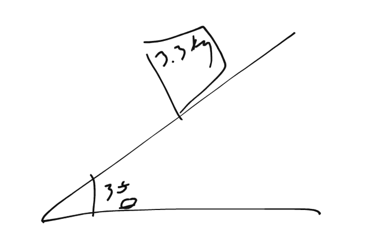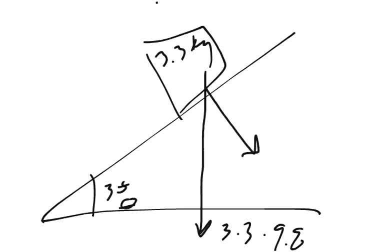Alright, so here we go. We have a crate, we have an incline, it's 35 degrees. We're going to call it 35 or theta, either one's fine. We have a crate that weighs 3.3 kg that has gravity acting on it in such a way as 3.3 times 9.8. And it's got a force acting on it, like this.